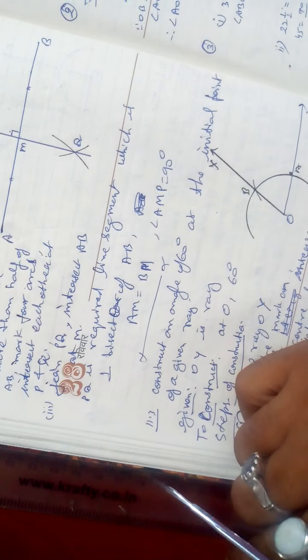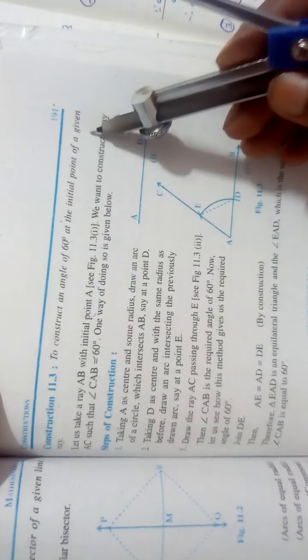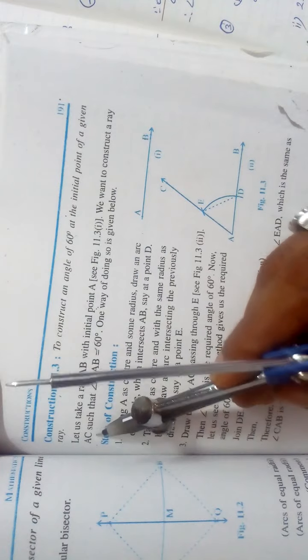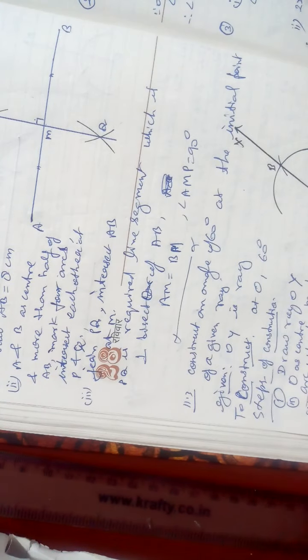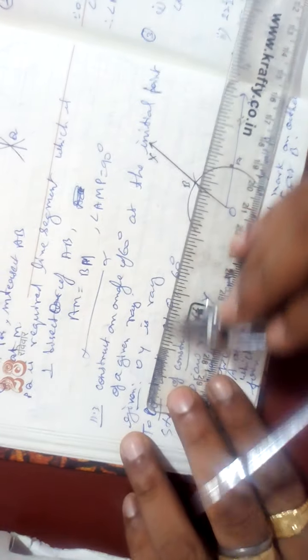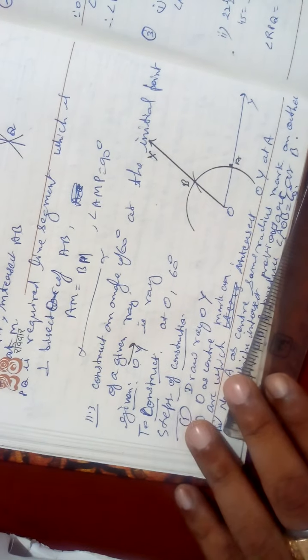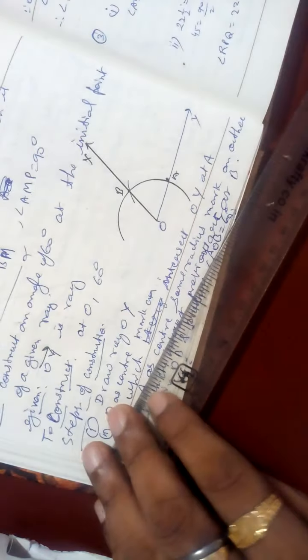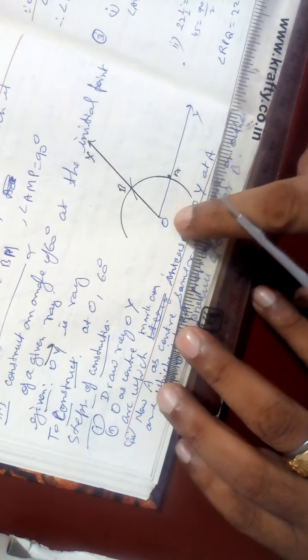The third type of construction given in the book is: to construct an angle of 60 degrees at the initial point of a given ray. As I already told you — OA is a ray whose initial point is O.